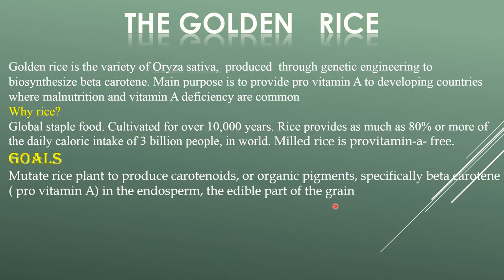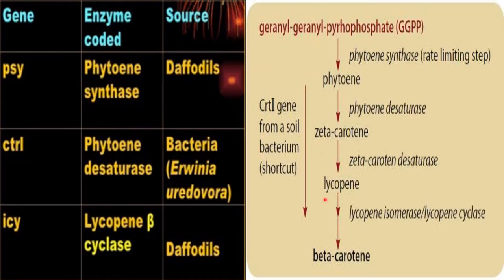So what is the goal of golden rice? The goal is to produce beta-carotene — an organic pigment, specifically pro-vitamin A — in the endosperm, which is the edible part of the grain. Beta-carotene will be synthesized from the geranylgeranyl pyrophosphate pathway.